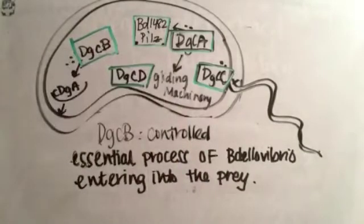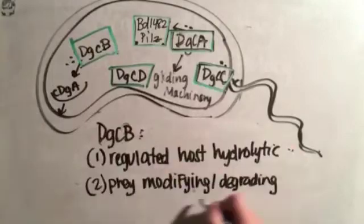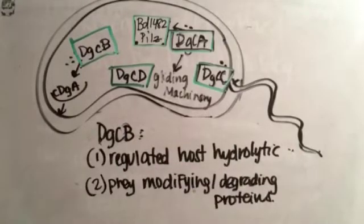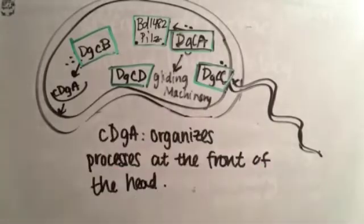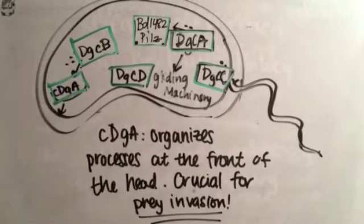Gene DgcC controlled essential processes of Bdellovibrio entering into the prey. It also regulated host hydrolytic and prey-modifying degrading proteins. Gene CdgA organized the processes at the front of the head and has been a crucial component for prey invasion.